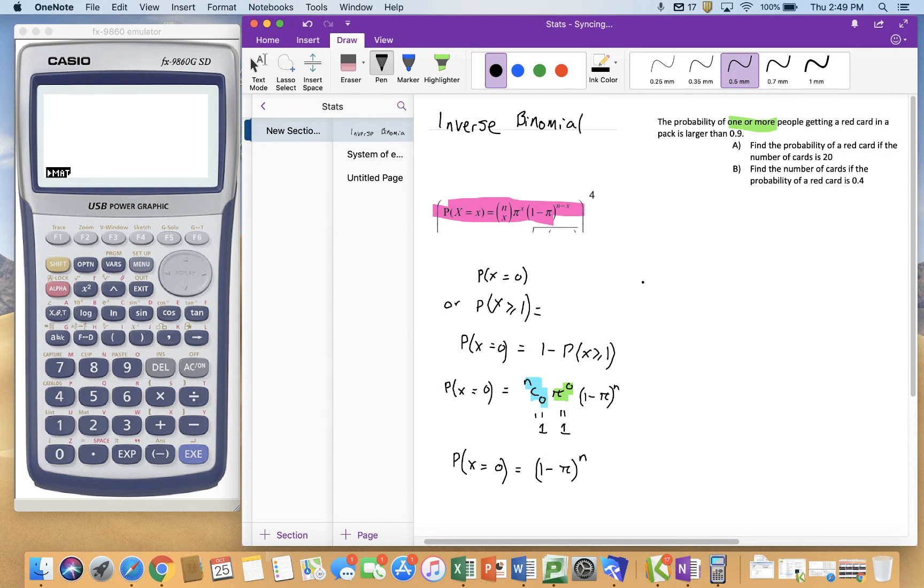So we're going to work through and solve these problems, and we're going to do it on the calculator so you can see how I get my answers. So the first one, I've been told the probability of x being greater than or equal to 1 is 0.9. So therefore, the probability of x equals 0 is 1 minus 0.9, which is 0.1. And I had to work that out for both of my situations.